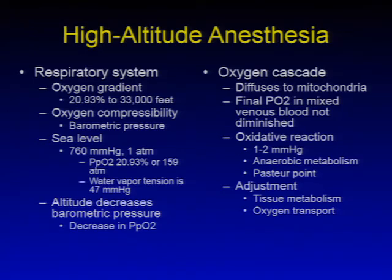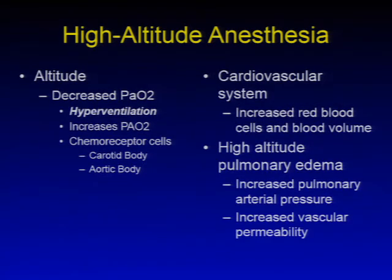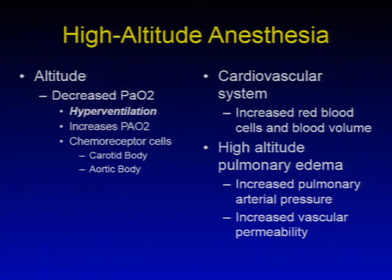Adjustment is needed in order to ensure tissue metabolism and oxygen transport in the body. With high-altitude anesthesia, there is a decreased PaO2. This may lead to hyperventilation, which increases the alveolar oxygen partial pressure. The chemoreceptor cells may be triggered in the carotid body or the aortic body. The cardiovascular system may respond with exposure to continuous high altitude by increasing red blood cells and blood volume in chronic exposure.